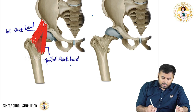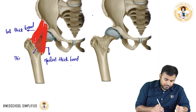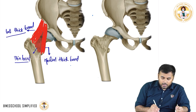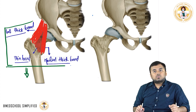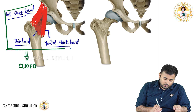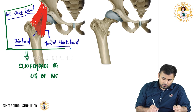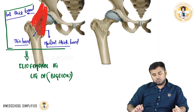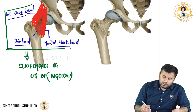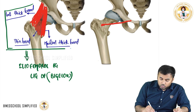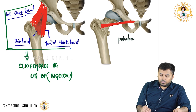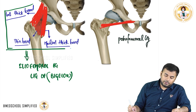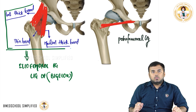So the iliofemoral ligament has three parts: lateral thick band, medial thick band, and a thin band in the center. All three together form the iliofemoral ligament, also called the ligament of Bigelow. Next, from the superior ramus of the pubic bone to the femur, this ligament is called the pubofemoral ligament.